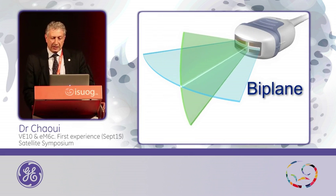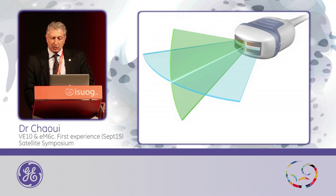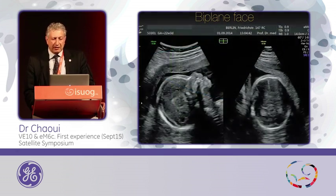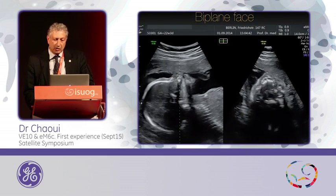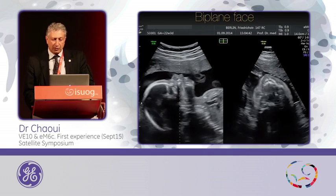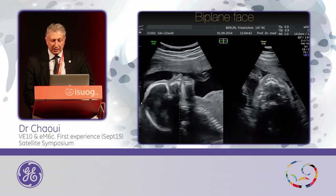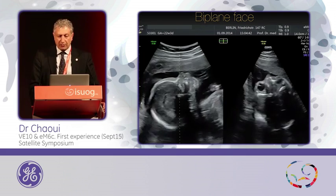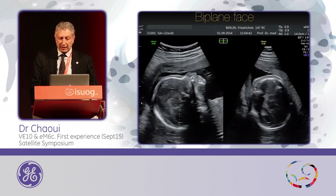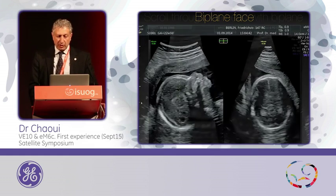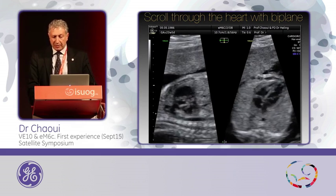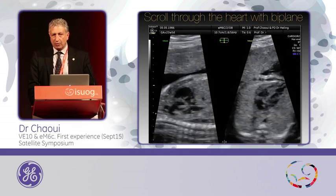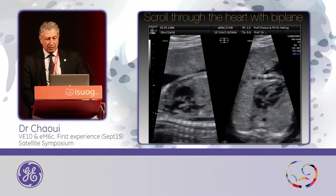An exciting tool is the biplane, where in addition to the plane you are scanning, you can have an orthogonal plane. Some people think, 'Do I really need this?' But once you start using this technique, you will get used to it because you will have a look at the same time at the profile, and here you see the palate. You can get a cross-section of the eyes. By getting a longitudinal view, you can take the line and scroll up and down from the 4-chamber to get the three vessels within a sweep while looking at the non-moving baby.